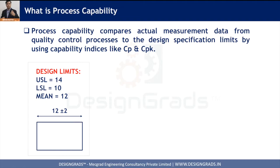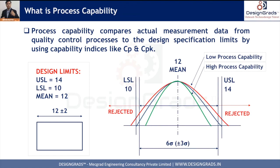To perform process capability analysis, we collect a lot of measurement data from many parts. Graphically, the green curve shows high process capability: the mean is centered and the variation is so low that it stays well away from both the Upper and Lower Specification Limits, meaning very few parts will be rejected.